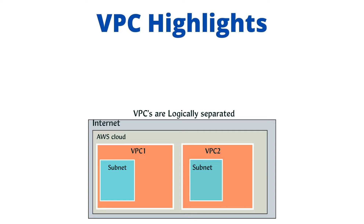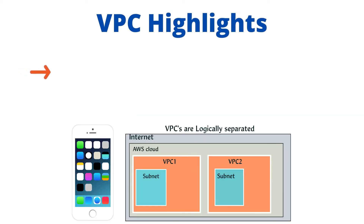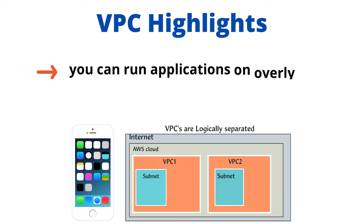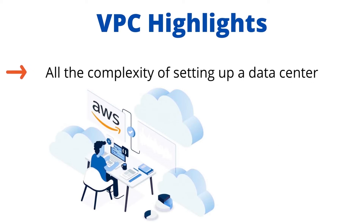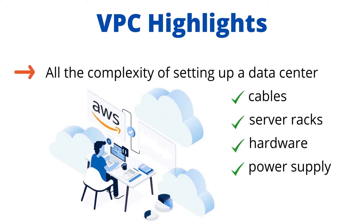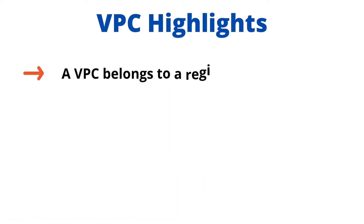VPC highlights: a VPC is a logically isolated piece of AWS cloud dedicated to your company. This means you can run applications on highly available and redundant infrastructure managed by AWS. All the complexity of setting up a data center — cables, server racks, hardware, power supplies, etc. — are all managed by AWS. A VPC belongs to a region.